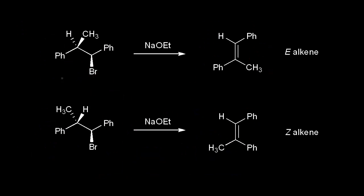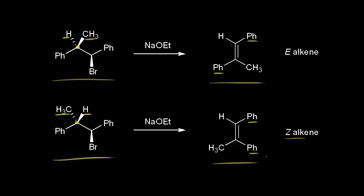To summarize both reactions: when the methyl group comes out at us and the hydrogen goes away, we get the E-alkene, with the two phenyl groups on opposite sides of the double bond. When the stereochemistry is changed — hydrogen coming out and methyl group going away — we get the Z-alkene, with the two phenyl groups on the same side. This demonstrates that the E2 reaction is stereospecific: the stereochemistry of the substrate determines the stereochemistry of the product.